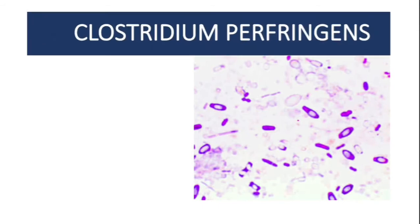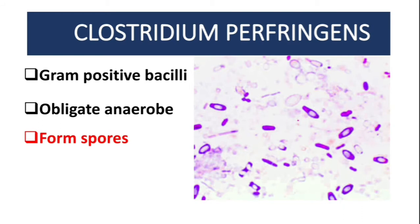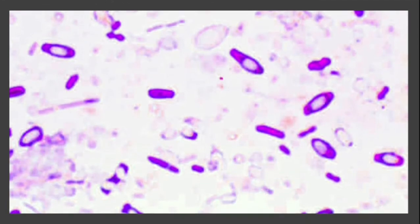To conclude the Clostridium species, we are going to talk about Clostridium perfringens. This bacteria is a gram-positive bacillus which is an obligate anaerobe, meaning it doesn't like oxygen at all. Like other Clostridium species, it has the ability to form spores.